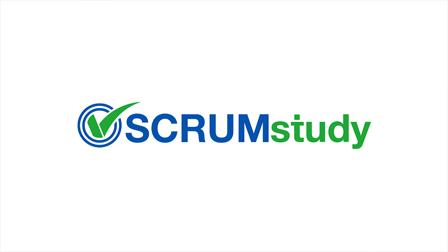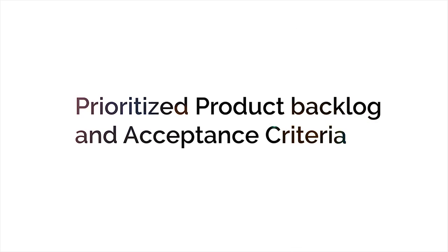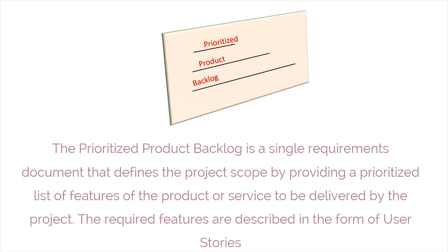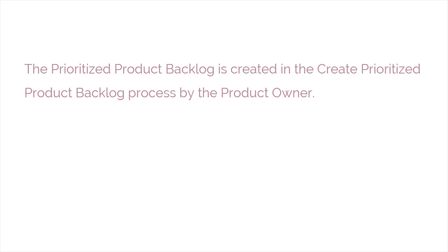Now that we understand the differences between quality and scope and how they are related with business value, let us discuss what prioritized product backlog and acceptance criteria are. The prioritized product backlog is a single requirements document that defines the project scope and quality by providing a prioritized list of features of the product or service to be delivered by the project. It is created in the Create Prioritized Product Backlog process by the product owner.